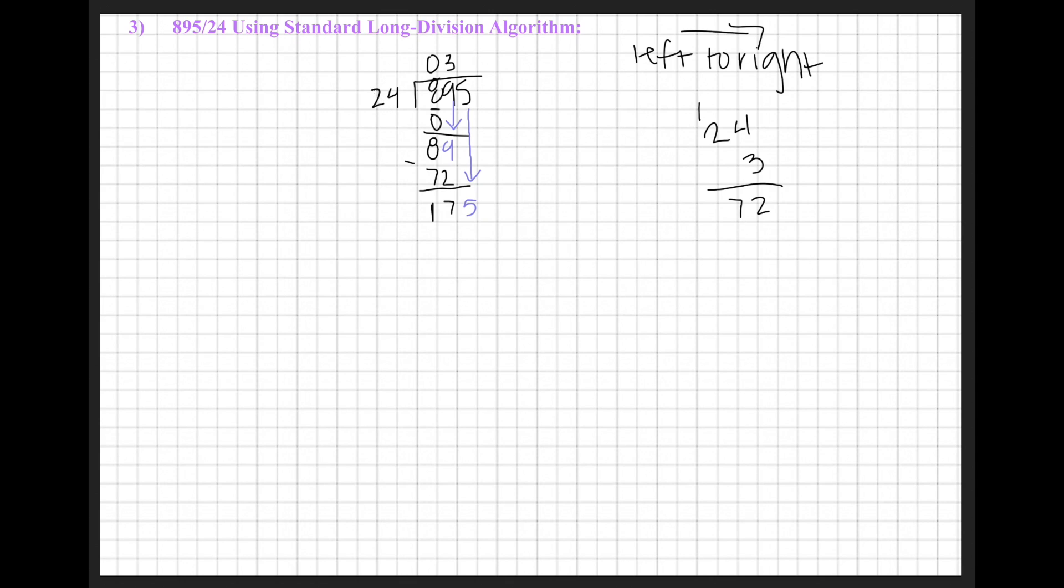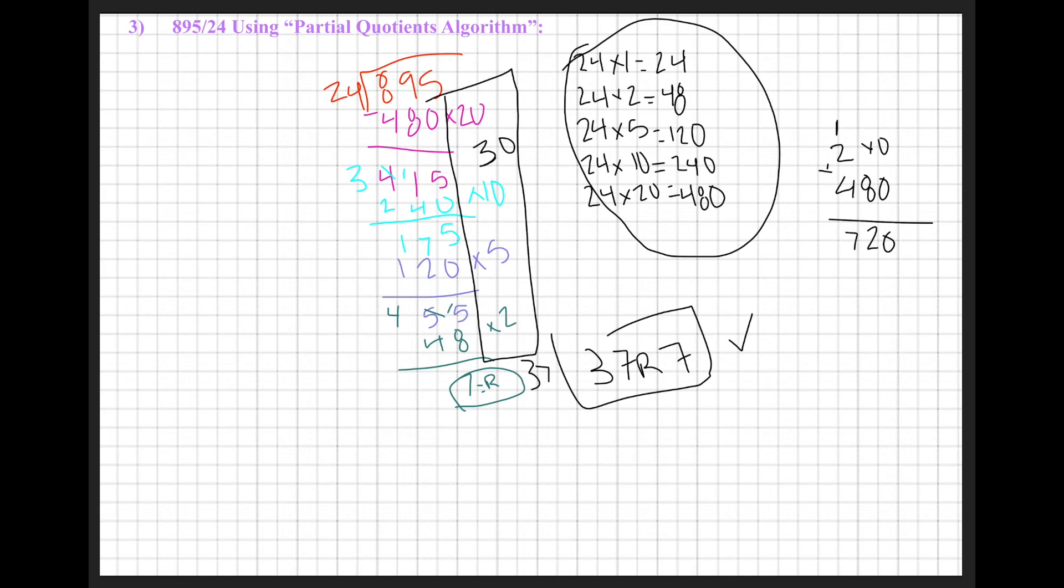So now we're trying to decide how many times 24 goes into 175. Again, referring back to our partial quotients algorithm, our 1's values were 5 and 2. When you add 5 and 2 together, you get 7, so we're doing the same thing. 24 times 5 is 120, 24 times 2 is 48.